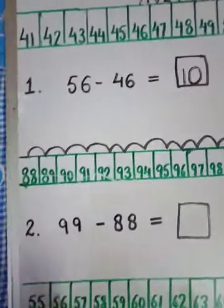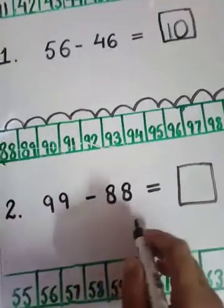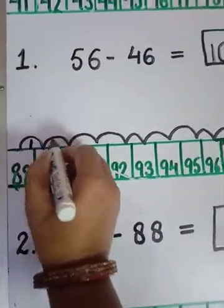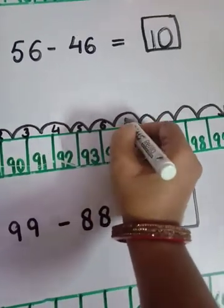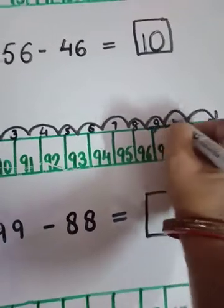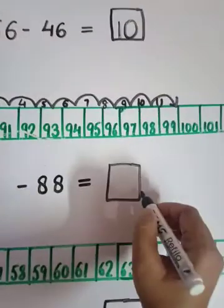This way we did forward counting and subtracted. Now we'll count the jumps: 1, 2, 3, 4, 5, 6, 7, 8, 9, 10, 11. How many jumps we count? 11. Okay.